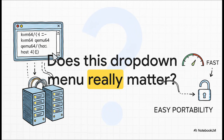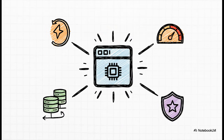If you've ever set up a VM, you know this exact moment. You're clicking through the wizard, everything's going great, and then you hit this menu. You get this long list of cryptic names and you just pause, thinking: does this really matter? Can't I just leave the default and move on? Well, the answer is a huge resounding yes — it matters a lot. This one little choice can totally change your performance, your ability to move VMs between servers, and the overall stability of your entire system. This isn't just some setting you can ignore. It's a strategic decision.